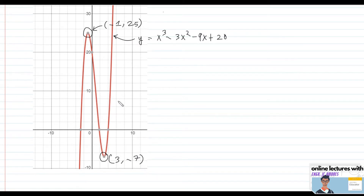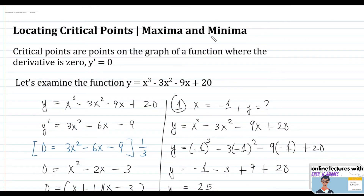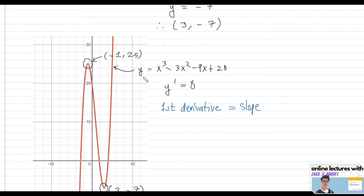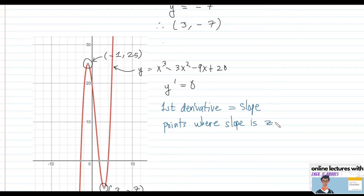What does it mean when y' = 0? We know that the first derivative equals the slope of the curve at any given point. Since we equated the first derivative to zero, we are solving for the points where the slope is zero. Both critical points (-1, 25) and (3, -7) have a slope of zero.